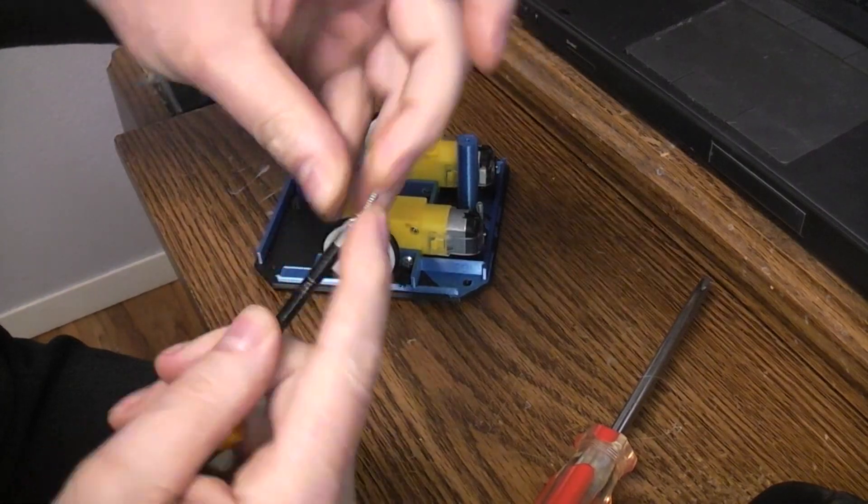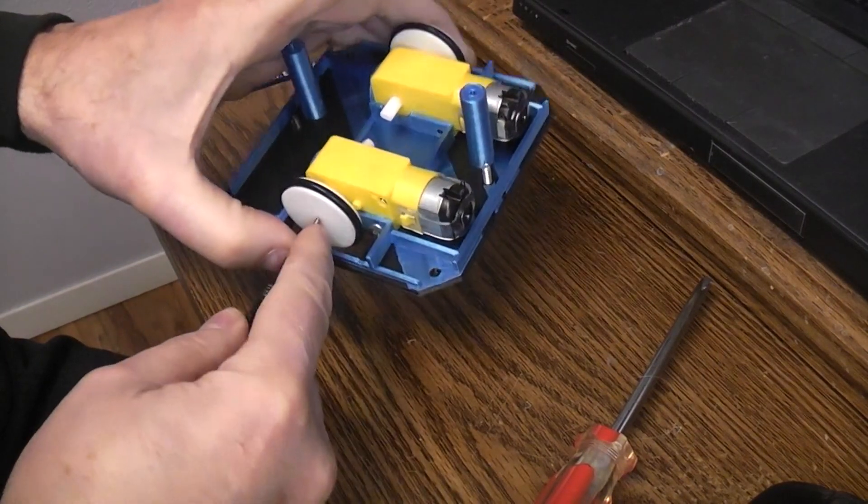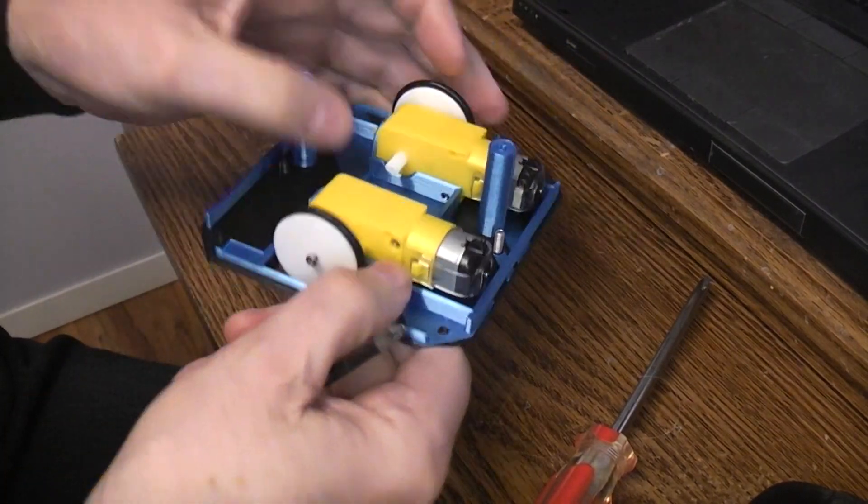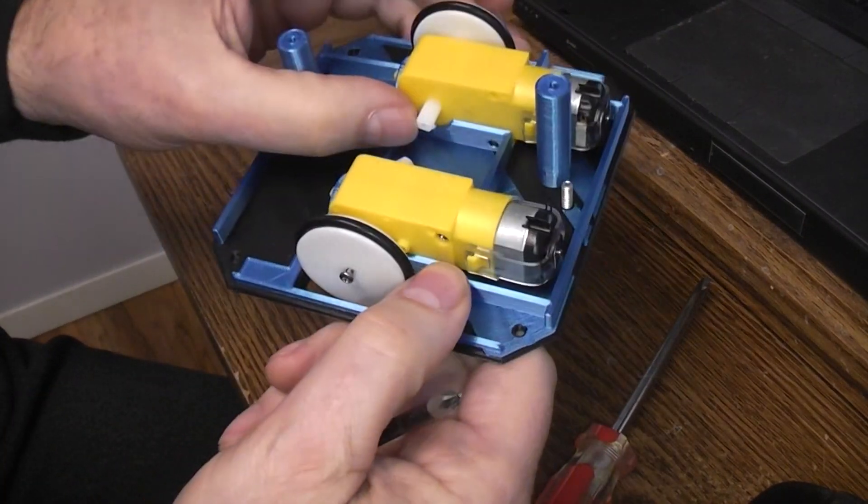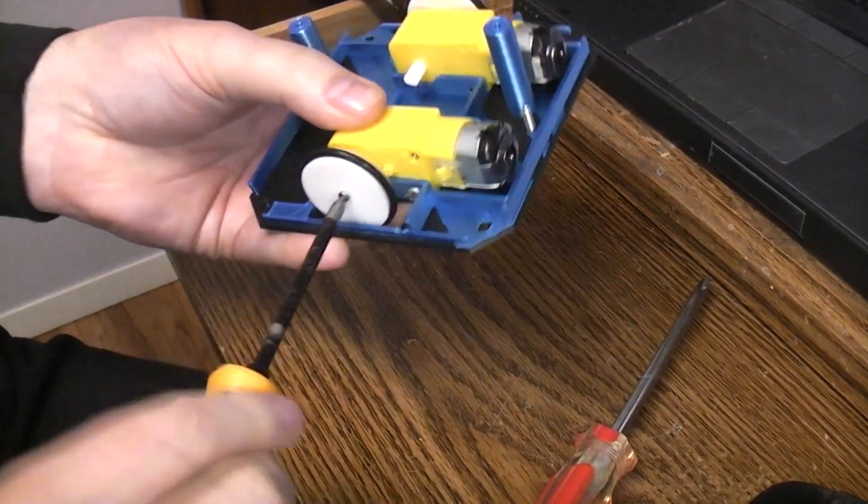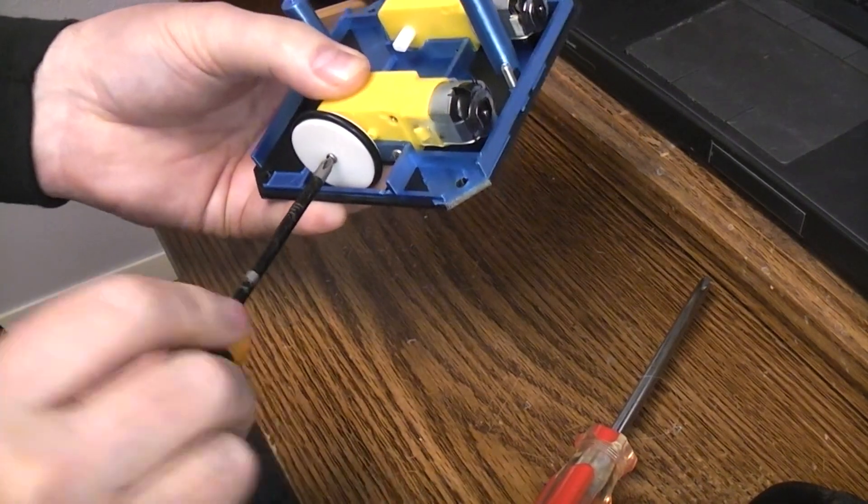Then this is a number two self-tapping, I believe by 3/8 long. But again, whatever you've got that'll tap into the opening in the end of the motor will work. It's just something to hold the wheel on so it doesn't fall off.